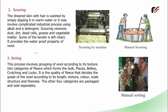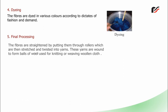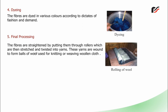The other four categories are packed and sold separately. Fourth is dyeing: the fibres are dyed in various colours according to the dictates of fashion and demand. Fifth is final processing: the fibres are straightened by putting them through rollers, which are then stretched and twisted into yarns. These yarns are wound to form balls of wool used for knitting or weaving woolen cloth.